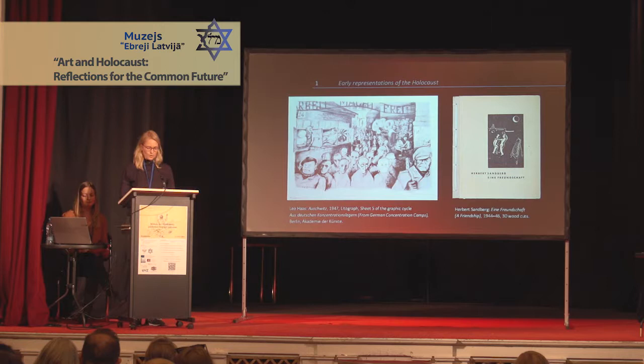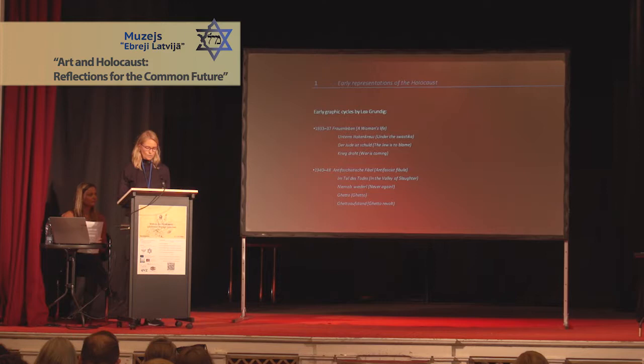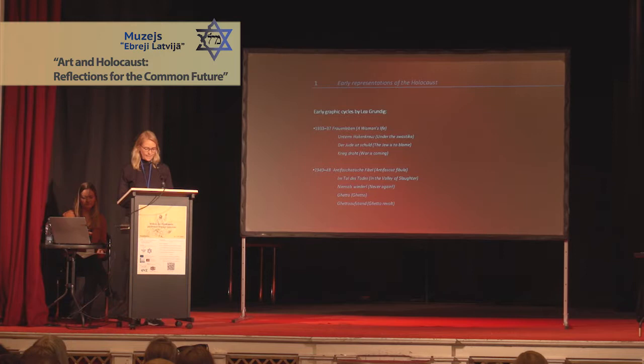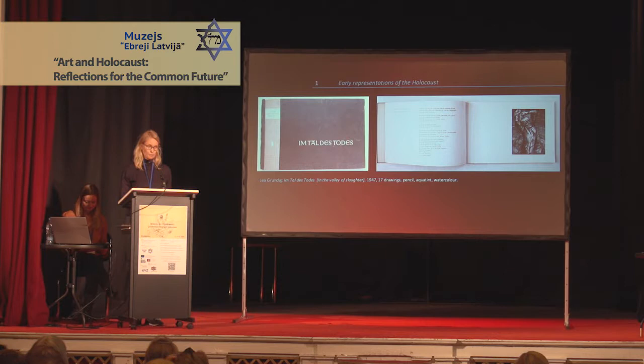As an early example of images of the Holocaust in East German art, we would like to introduce the work of artist Lea Grundig. Grundig was of Jewish faith and a member of the Communist Party in Germany. As such, she was arrested by the Gestapo in 1938. After her release, she emigrated to Israel. Already in the early 1940s, Grundig began working on graphic cycles dealing with the crimes of the Nazi regime. Unlike the artists Haas and Sandberg, Grundig never was imprisoned in a concentration camp. Nevertheless, she managed to create authentic images that were important contributions to the formation of an iconography of the Holocaust in Germany, in both German states, and that were accessible to the public in publications and exhibitions.